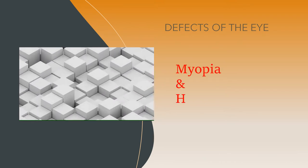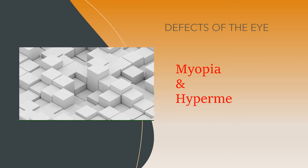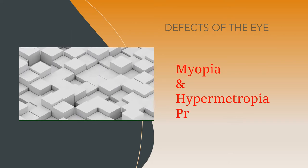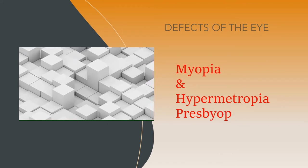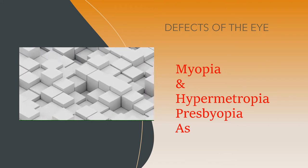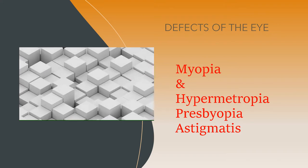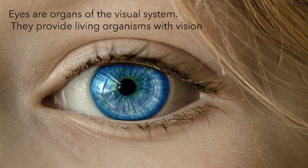Defects of the eye. Do you know what are the most common types of eye defects? Myopia, hypermetropia, presbyopia, and astigmatism — these are the common eye defects. Eyes are organs of the visual system; they provide living organisms with vision.